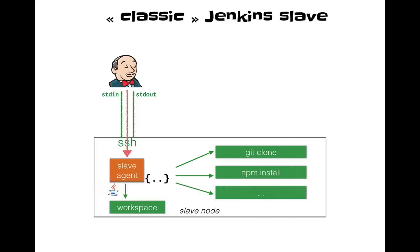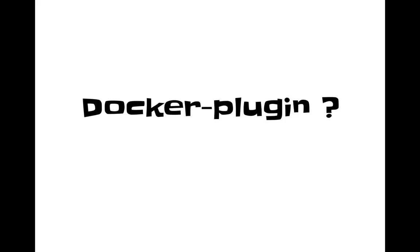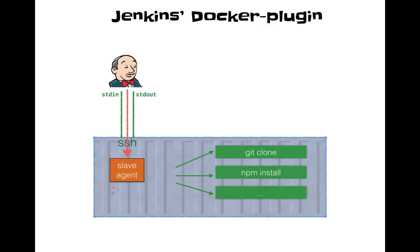Let's now compare with the Docker plugin. This one lets you define a custom Docker image to host your build. What it actually does is replace the slave node with a Docker container. But everything else is the exact same: connecting inside the container, in most cases using SSH, starting the slave agent and running commands inside this container.